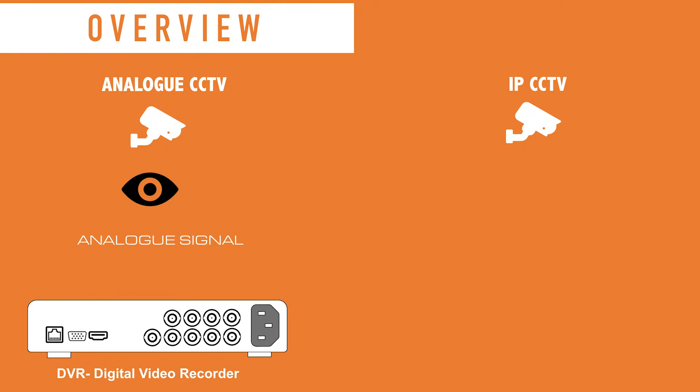Beginning with an overview: analog CCTV is like having an eye connected to a recorder. It only provides visuals and hence it's an analog signal, sent usually via a coaxial cable known as an RG59. That gets plugged into what's known as a DVR or digital video recorder. At the back of this illustration, you can see the standard BNC connectors.